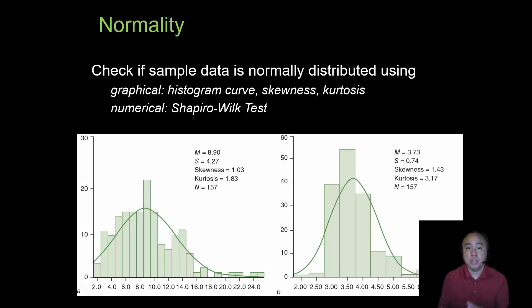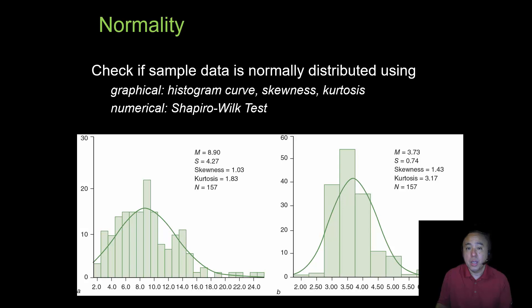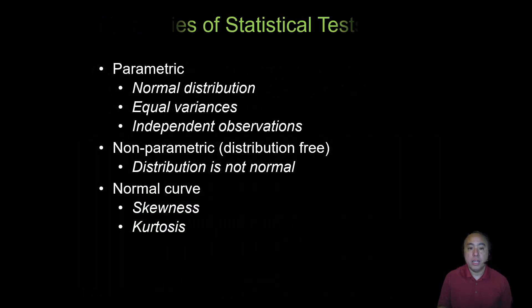We can also use numerical methods such as the Shapiro-Wilk test, which is a commonly used technique available in SPSS, R, or SAS, and that gives us an indication of whether or not the distribution of our data is normal.